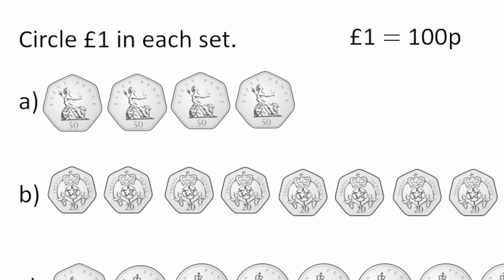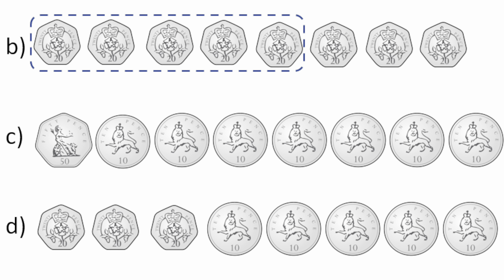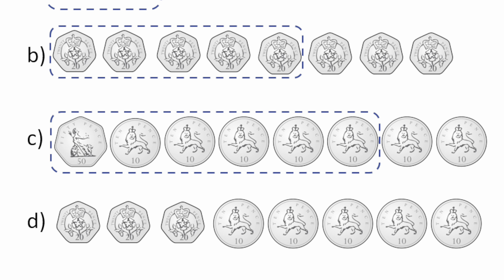Now we know one pound is the same as 100 pence. Let's see if we can work out what one pound is in each set. How many 50 pences make a pound? That's right, two do. How many 20 pences should we circle to make a pound? 20, 40, 60, 80, 100 — 100 pence equals a pound, so we should have circled 5 twenty pences. For number C, we start at 50 pence and count on: 50, 60, 70, 80, 100 pence. So we circle the 50p and 4 ten pences.